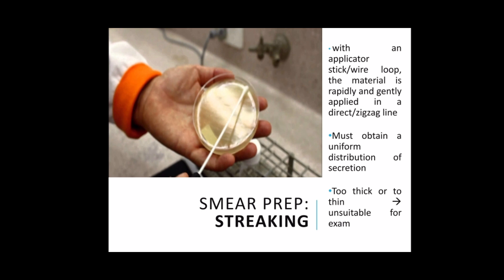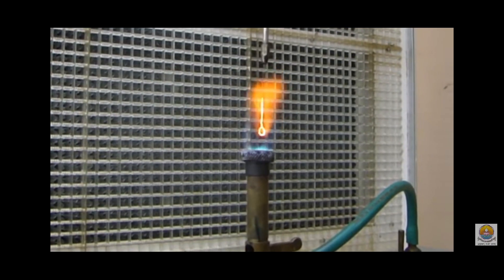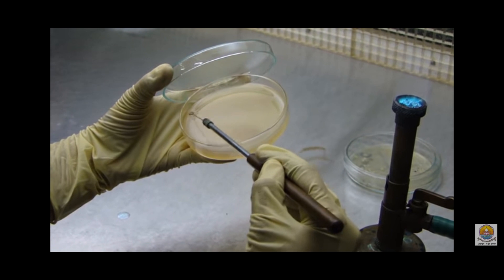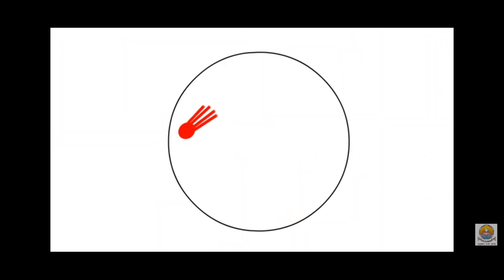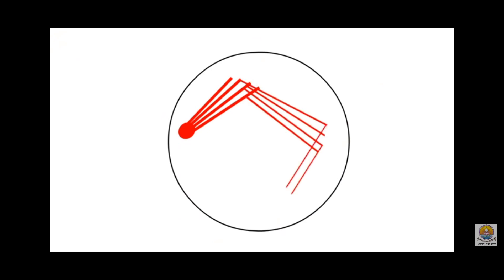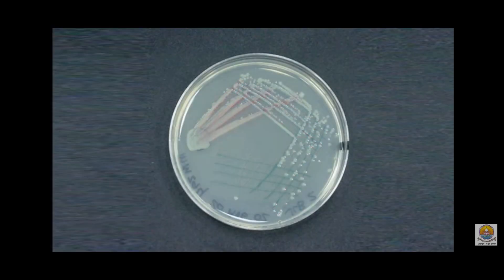Under smear preparation, we have streaking. With streaking, you will use an applicator stick or a platinum loop. The material is rapidly and gently applied in a direct or zigzag line throughout the slide, attempting to obtain a relatively uniform distribution of secretion. Too thin or too thick smears must be avoided since they make the tissues unsuitable for examination. This is the same way you spread or streak your bacterial samples onto an agar.